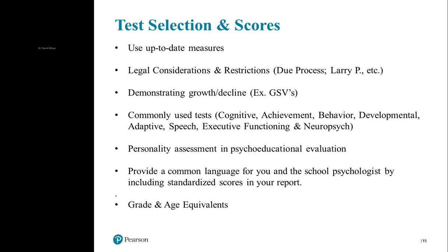Age equivalence versus grade equivalence is a topic that comes up a lot. Most states require age-based scores when you do your normative reflections of where the student falls, rather than grade-based scores. That's because grades are more highly influenced by regional variances — such as quality of the educational experience and teaching — which may impact reading acquisition in one district versus another that has fewer resources and more social challenges. By far you're going to be using age equivalent reference. Parents like to know grade equivalent, but we caution against it because it can be misrepresented too easily.